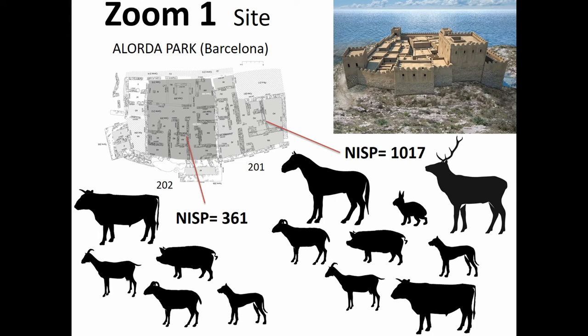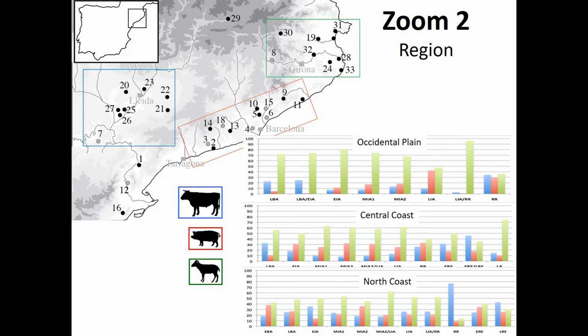I will move to the regional scale. For this region of Pacific Catalonia, we are subdividing the regions according to classical sources, giving us different entities. For the presentation, this is a color code: cattle are in blue, pigs are in red, and sheep and goats are in green. We have different units for the occidental plain, the central coast, and the north coast.